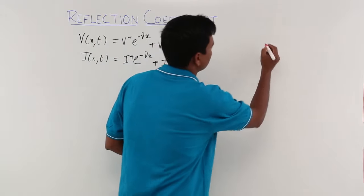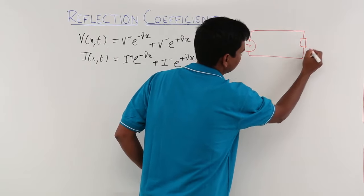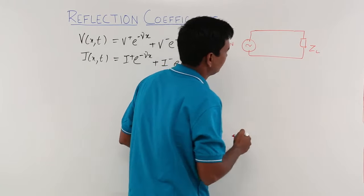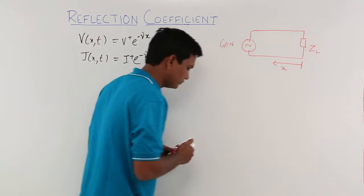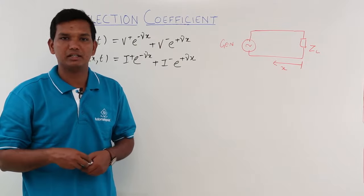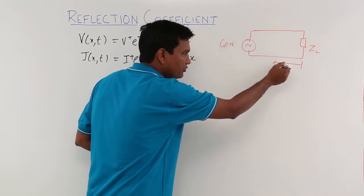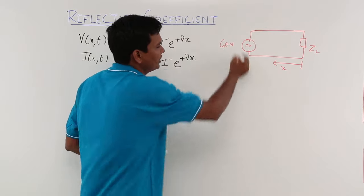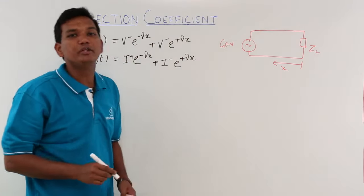Let me draw the transmission line. There are two things in the transmission line: one is when you are moving towards the generator, and another is moving towards the load. If I take a point and try to move in this direction, this is called moving towards the generator — the generator is nothing but your source. If I stand at this point and try to move in this direction towards the load, this is called moving towards the load.